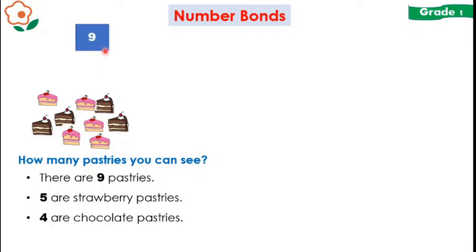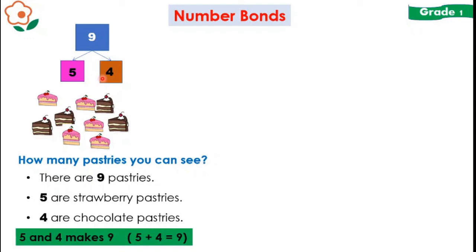So you can write 9 in the top box or the total box and 5, 4 are making its parts. 5 are strawberry pastries and 4 are chocolate pastries. You can say it as 5 and 4 makes 9 or 4 and 5 makes 9, or you can also write it as 5 plus 4 is equal to 9 or 4 plus 5 is equal to 9.